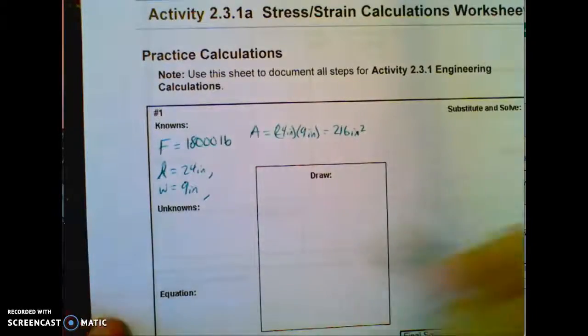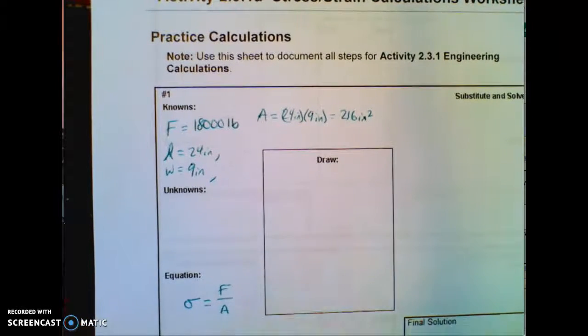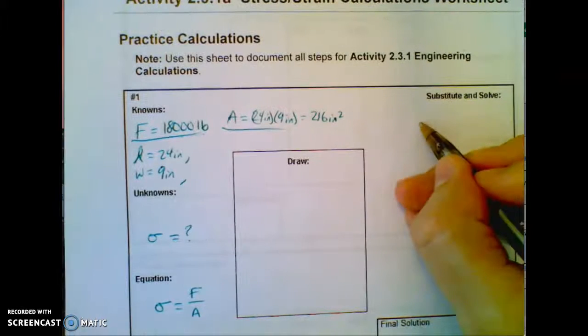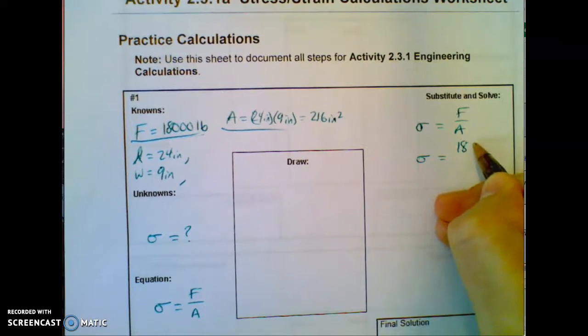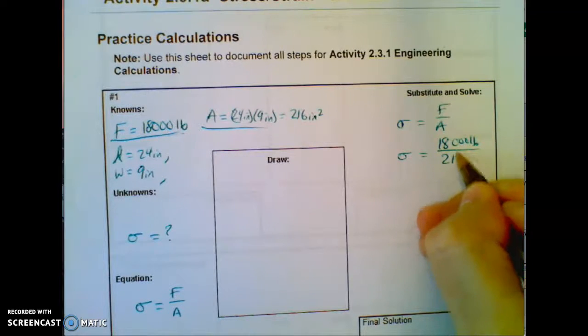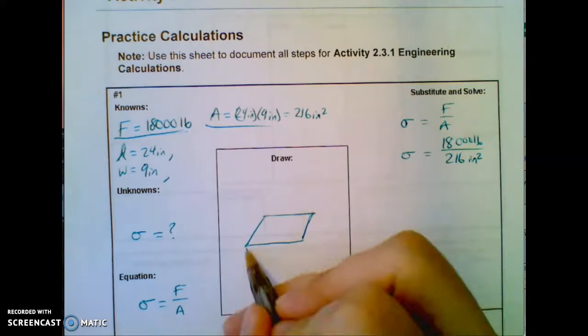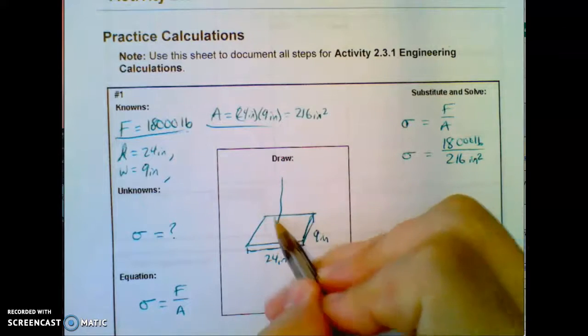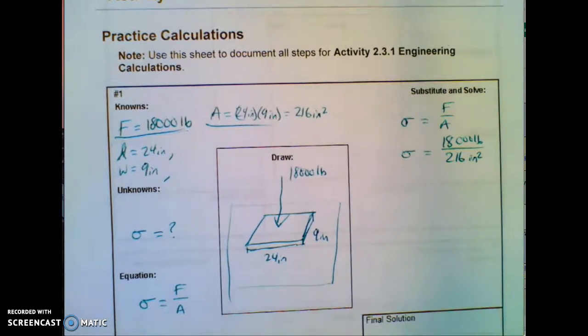So we got our stress. There's our stress, pounds over inches squared. So our equation is going to be stress, which is the symbol sigma, equals force over area. And then my unknowns, I just don't know stress. I think I know everything else. We have force, and we have area. So we're going to go ahead and substitute and solve. So we got stress equals F over A.